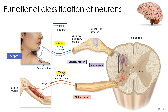Motor neurons, or efferent neurons, transmit impulses from the CNS to muscles or glands — these are known as effectors. The cell bodies of the motor neurons are housed in the ventral horn of the gray matter of the spinal cord. This image also shows the position of interneurons. Interneurons are entirely within the CNS and receive nerve impulses from many other neurons, carrying out the integrative functions of the nervous system by facilitating communication between sensory and motor neurons.